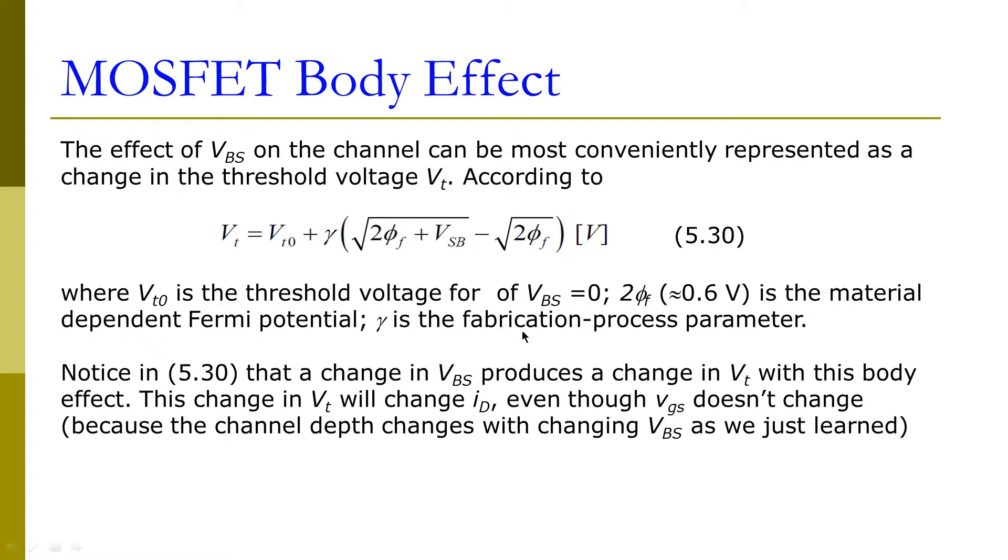The gamma here is the fabrication process parameter. Notice in this formula, a change in Vbs produces a change in Vt due to the body effect. This change in threshold voltage will change our current, even though Vgs doesn't change, because the channel depth changes with the changing Vbs, as we just learned.